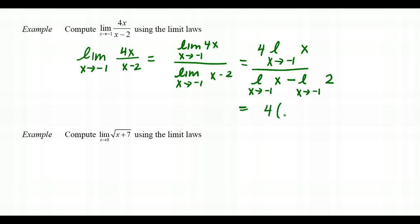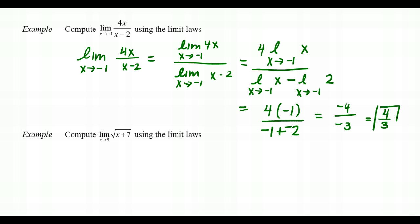In the numerator, the identity function gives x = -1, so we get 4 times (-1) = -4. In the denominator, the limit of x at -1 is -1, and the limit of the constant 2 is 2, giving -1 - 2 = -3. So the final answer is -4 over -3, which simplifies to 4/3.